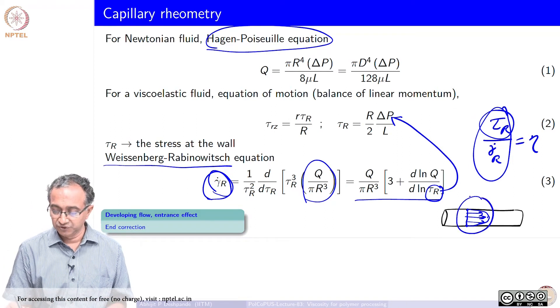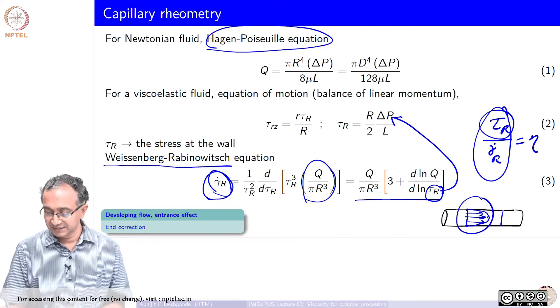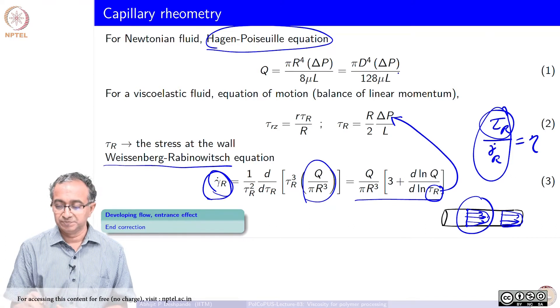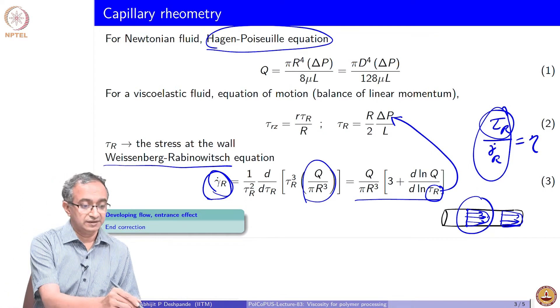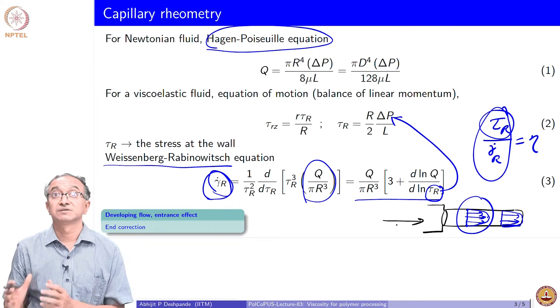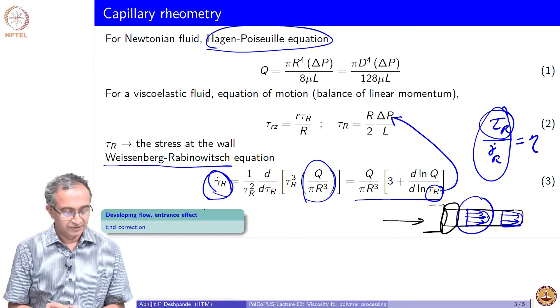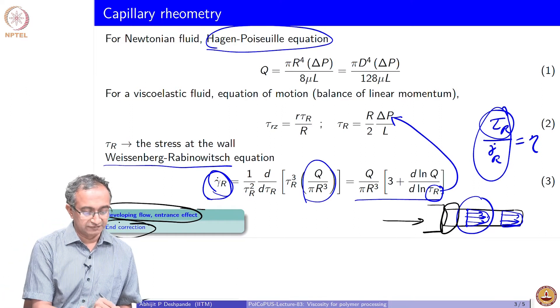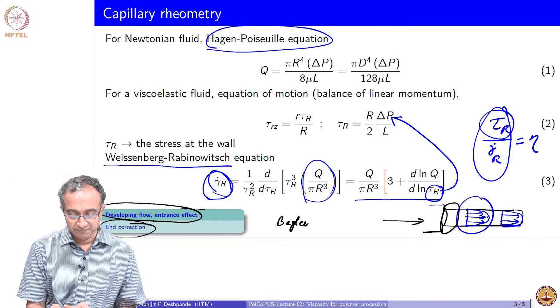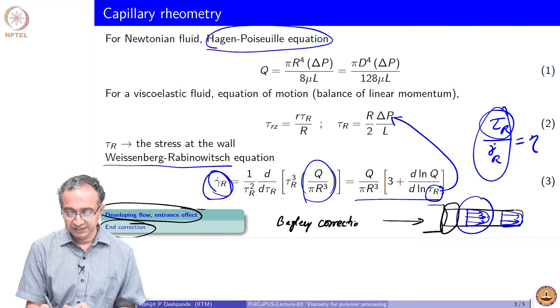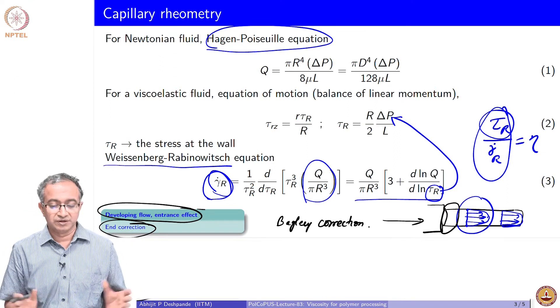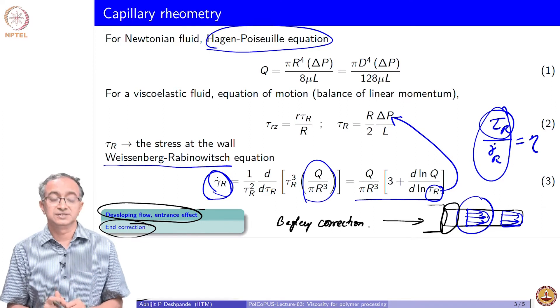One of the things is when you draw velocity profile like this it implies that it is the same when you travel along the pipe, then these relations are valid. But generally this capillary is being connected to some reservoir through which fluid comes in, so there will be some entrance effect. Developing flow or entrance effects will require some end corrections. Given that capillary rheometry is a very common technique, we also have the Bagley correction or there are other corrections which are more modern in terms of their usage. We can get very good estimates of viscosity using capillary rheometry.